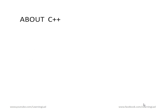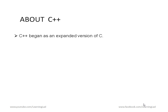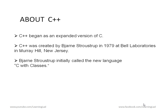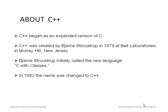First we are going to see some things about C++. C++ began as an expanded version of C. It was created by a man called John Stroschroff in 1979 at Bell Laboratories. He initially called his new language C with classes, but in 1983 the name was changed to C++ because people started to realize that C++ offers much more than C with classes.